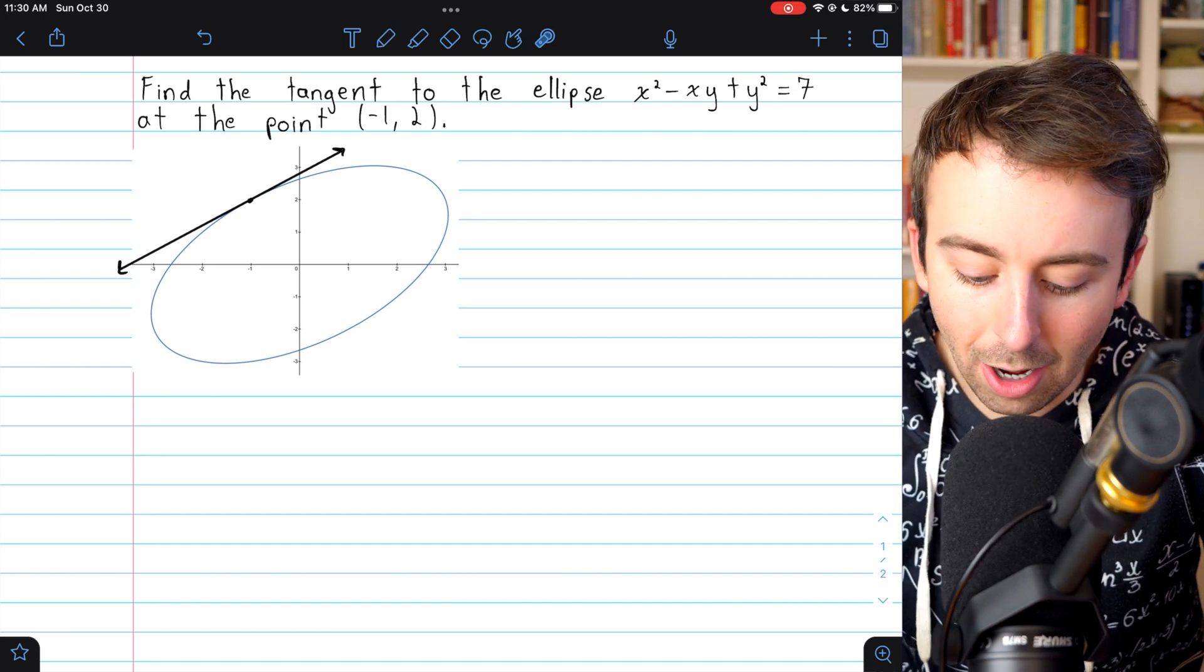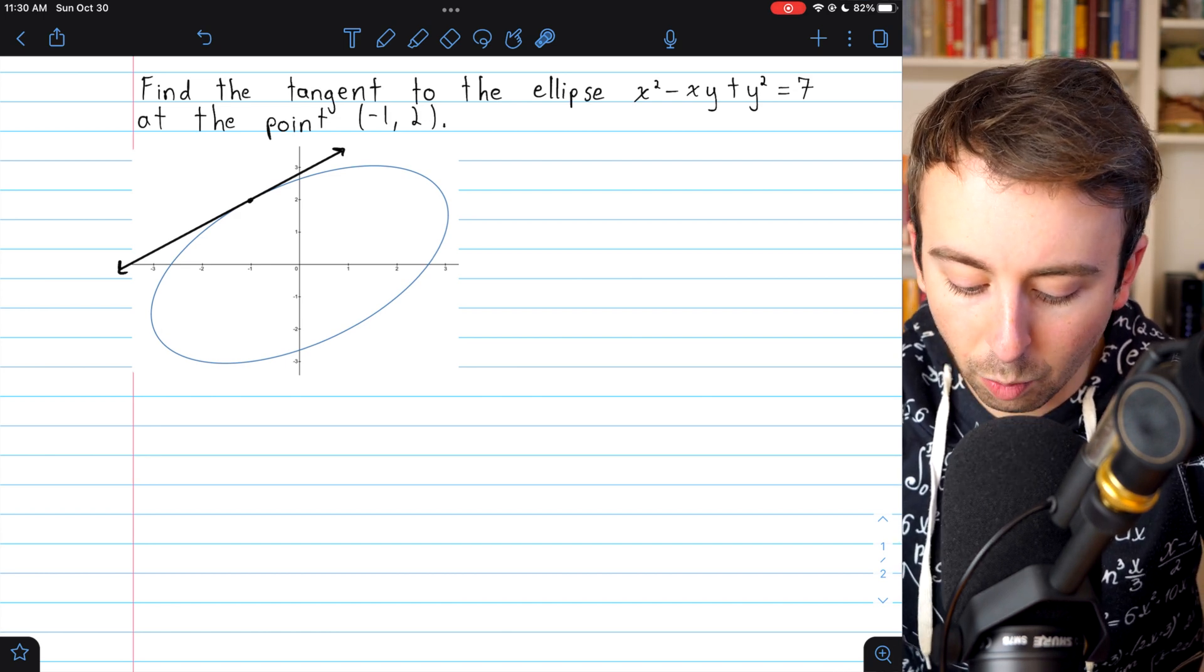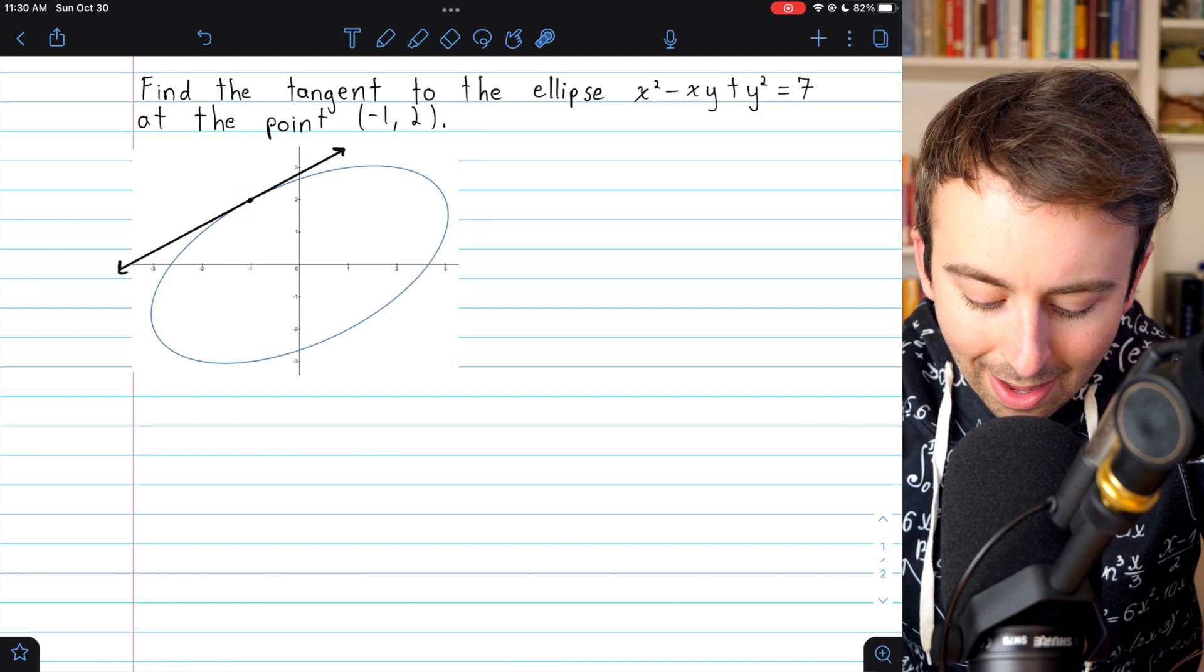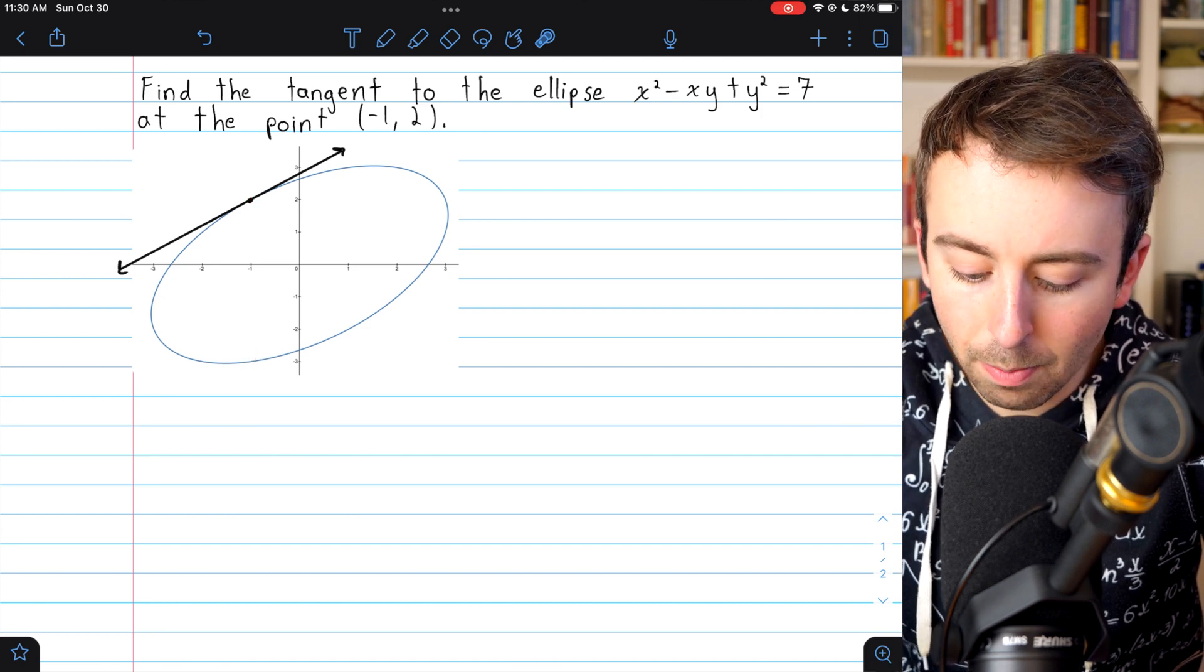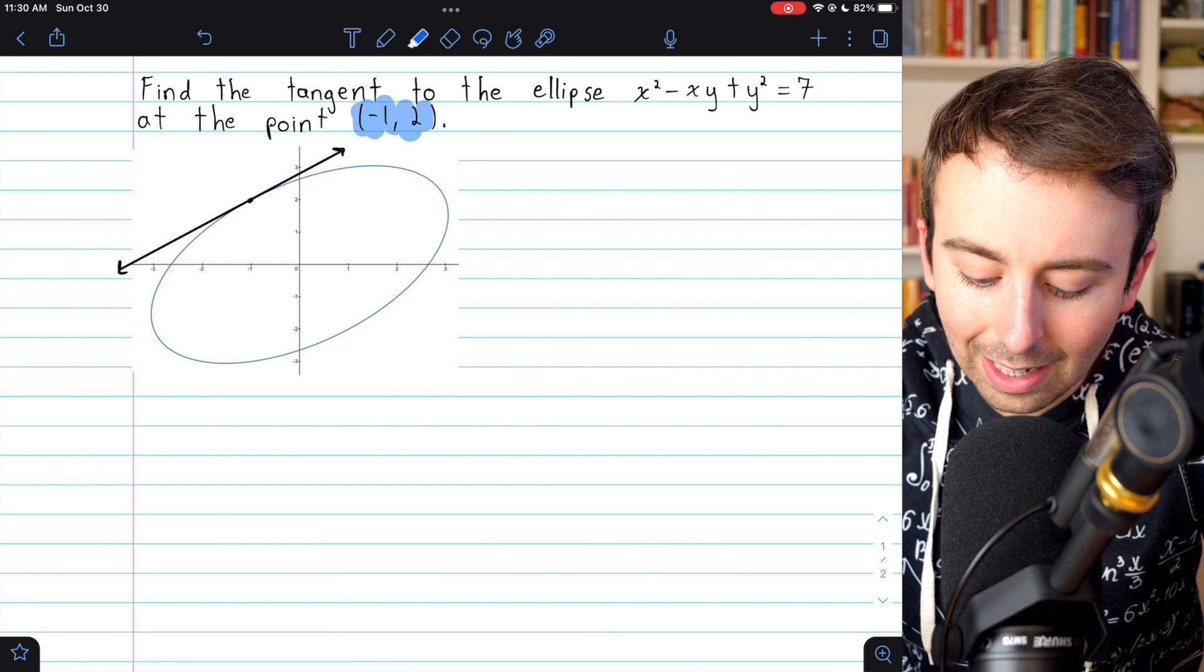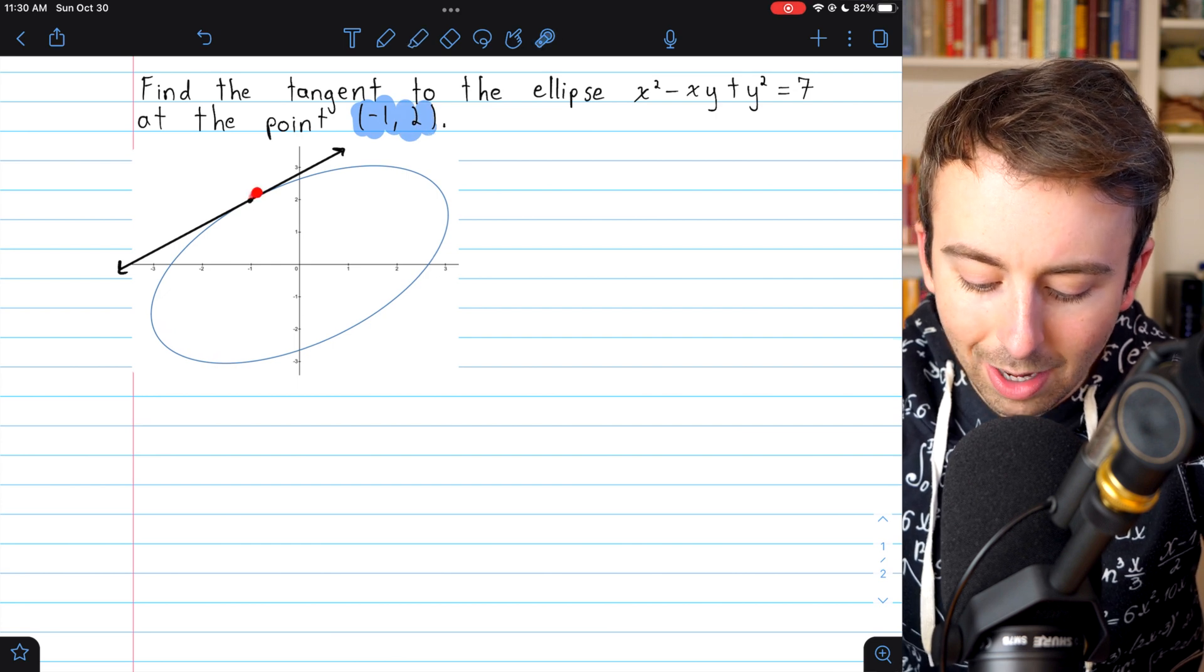Just an x-coordinate is not sufficient because -1 happens at this point and at this point. But we, of course, are looking for (-1, 2), so that's right there.